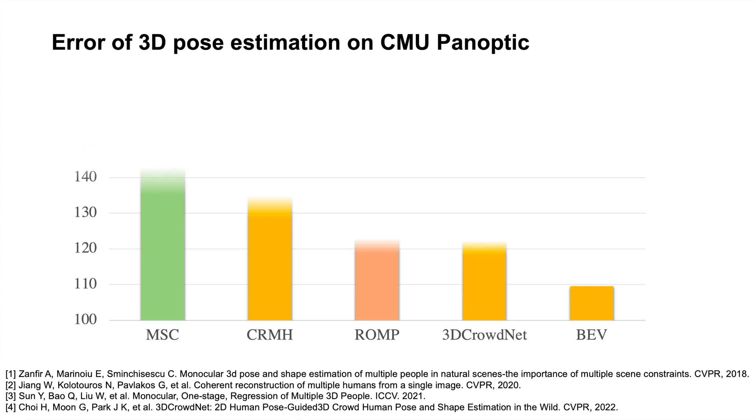This chart shows the 3D pose error of recent state-of-the-art methods in crowded scenes from the CMU Panoptic dataset. MSC and 3D CrowdNet are multi-stage methods that estimate the 3D mesh of multiple people. Compared with these state-of-the-art methods, BEV significantly reduces the 3D pose error.